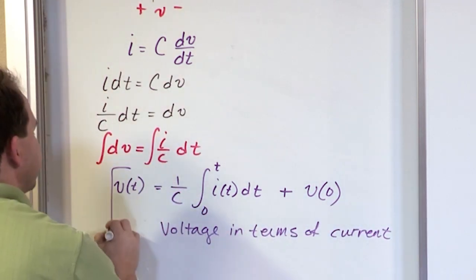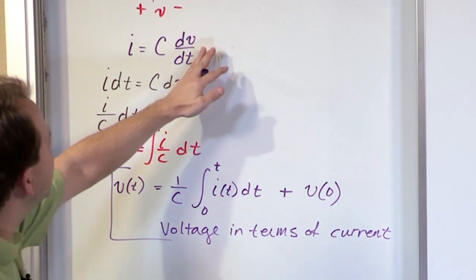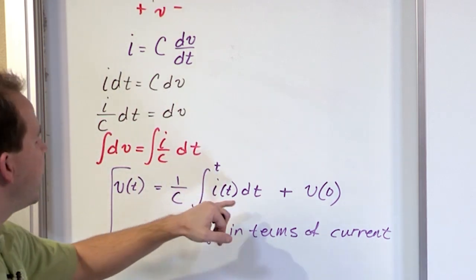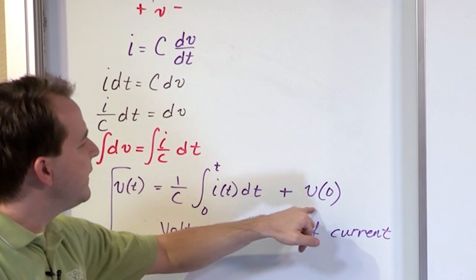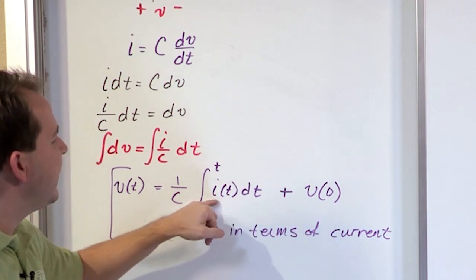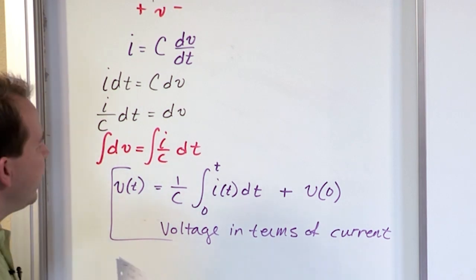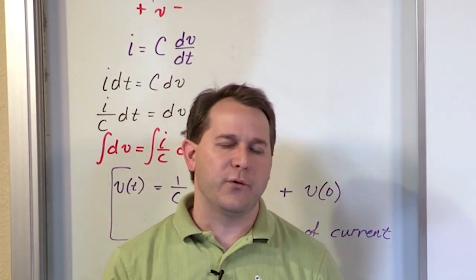So in other words, for a capacitor, if I already know the voltage behavior, I can calculate the current by that derivative. When I flip it all around and solve for the voltage, then if I know the current and I know the initial value of the voltage, I can just integrate the current, and then I recover the voltage. So this equation shouldn't look all that foreign to you. It's exactly the same equation we had for inductors.